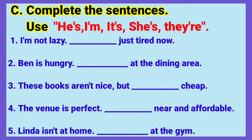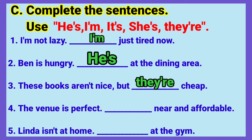Here are the answers for Exercise C. Number one: I'm not lazy, I'm just tired now. Number two: Ben is hungry, he's at the dining area. Number three: These books aren't nice but they're cheap. Number four: The venue is perfect, it's near and affordable. Number five: Linda isn't at home, she's at the gym.